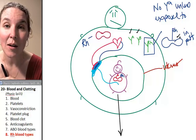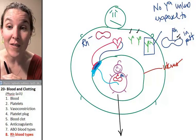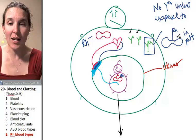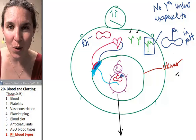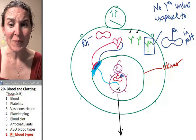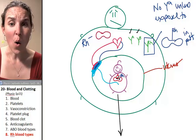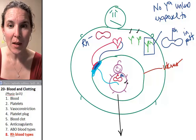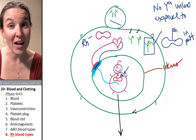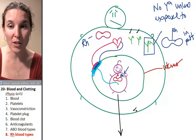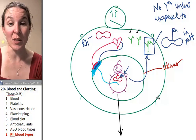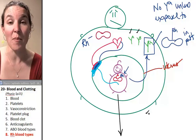Baby number one, mama does not have any anti-RH antibodies. None. She doesn't have them in her blood. She's never been exposed to the RH antigen before. Push that baby out, holy mixing of blood. Mom now gets exposed to the baby's RH factor. She's exposed to the RH factor.